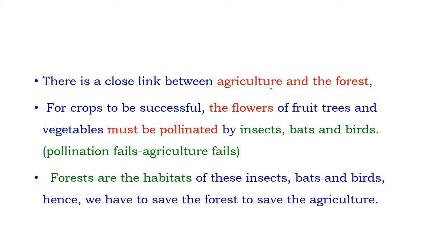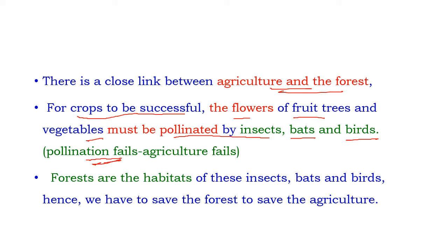There is a close link between agriculture and forests. For crops to be successful, flowers of fruit trees and vegetables must be pollinated by insects, bats, and birds. All agricultural products like flowers and fruits are formed only after pollination, so without pollination there is no agriculture. Forests are the habitats of these insects, bats, and birds; hence we must save the forests in order to save agriculture.